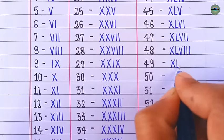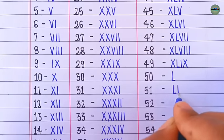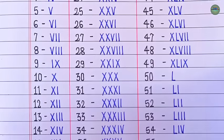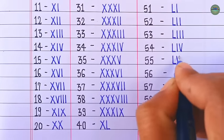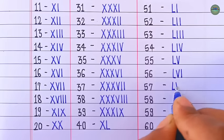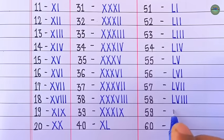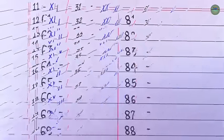49 is XLIX, 50 is L, 51 is LI, 52 is LII, 53 is LIII, 54 is LIV, 55 is LV, 56 is LVI, 57 is LVII, 58 is LVIII, 59 is LIX, 60 is LX.